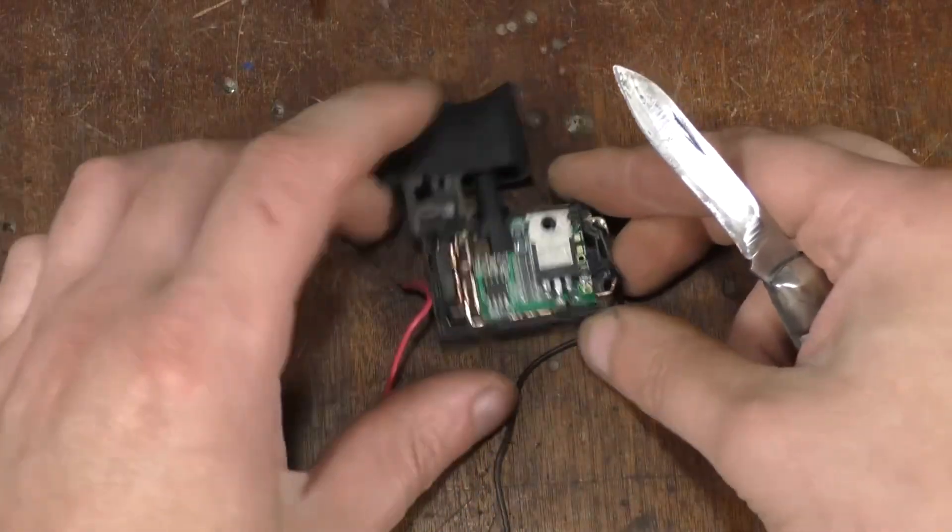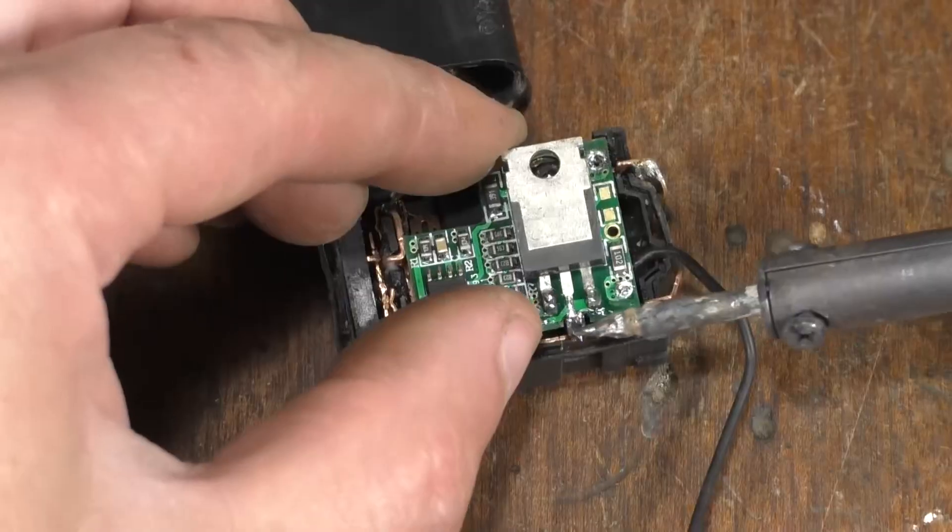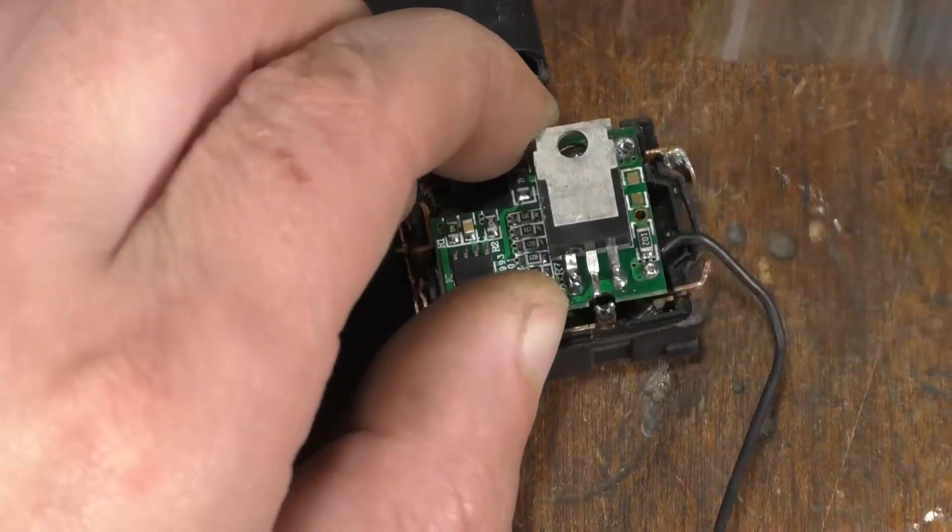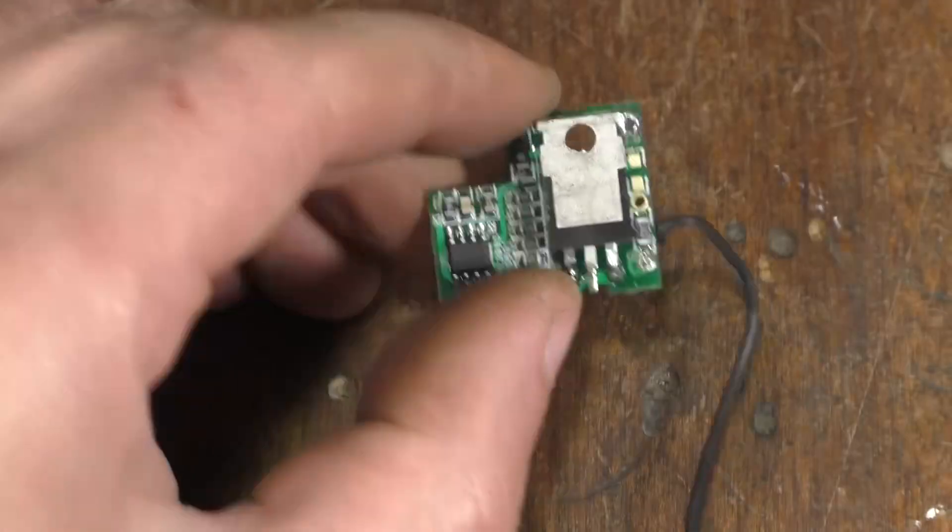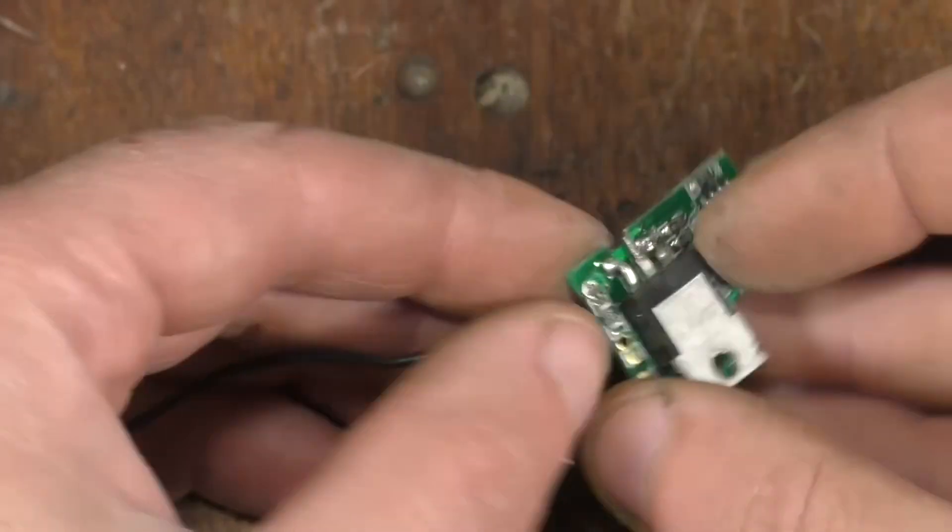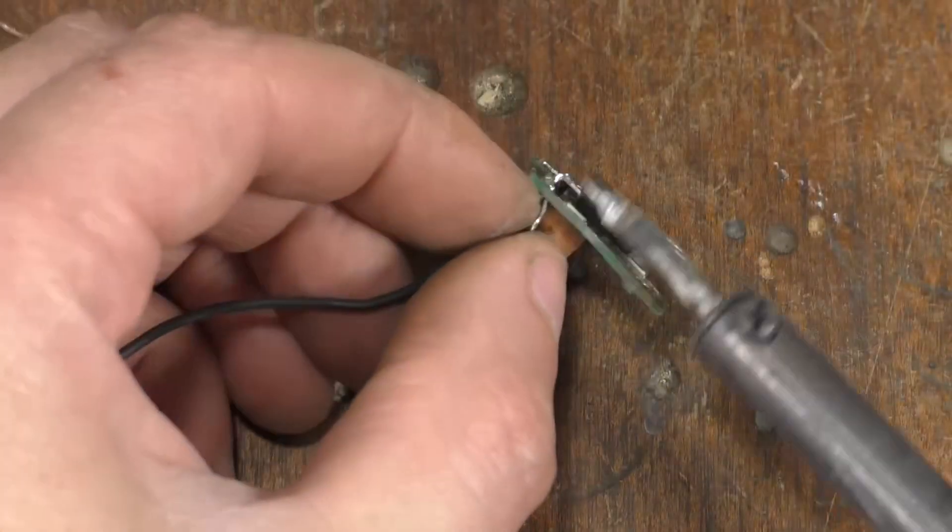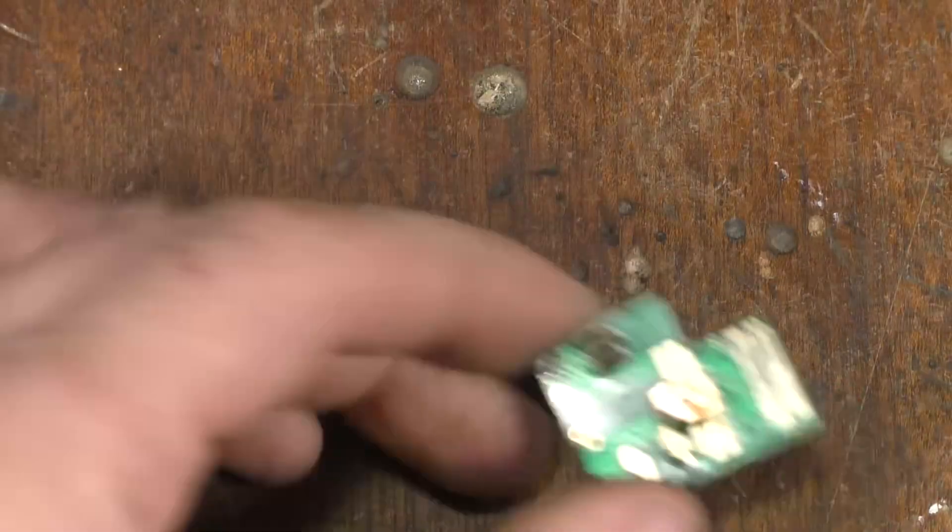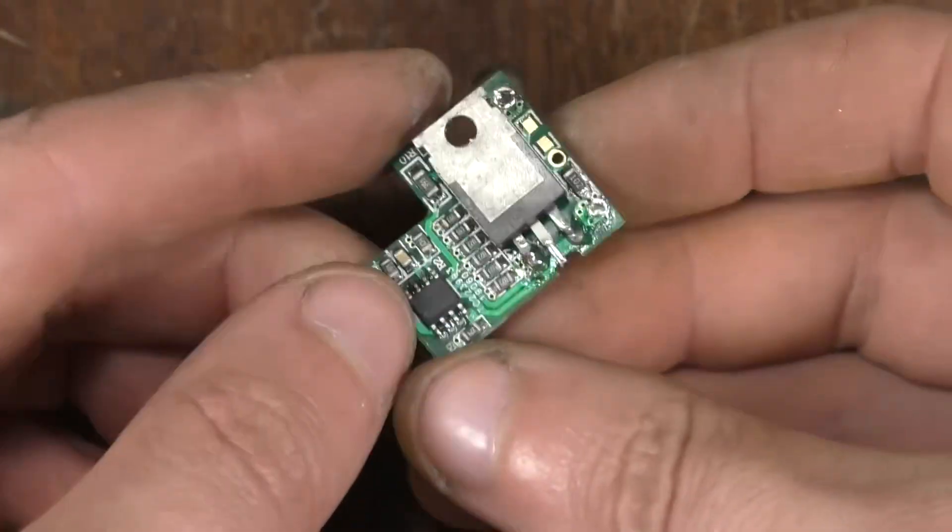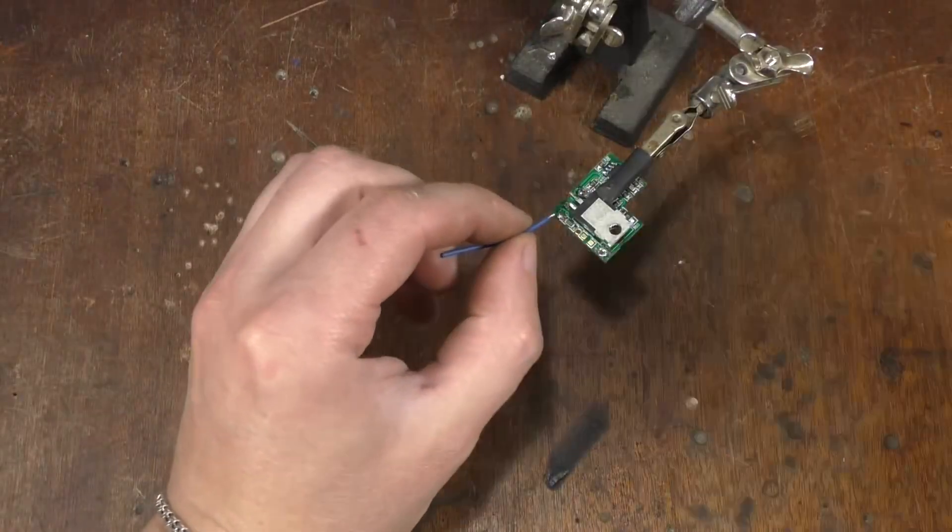Inside the button, there is a circuit board. Desolder the contacts from it and remove it from the case. Now you need to solder wires to the contacts on the board that were connected to the battery and to the motor contacts.